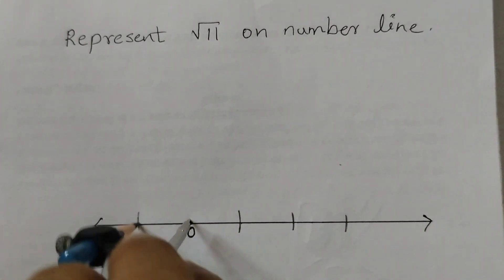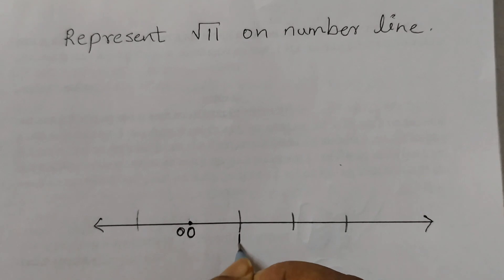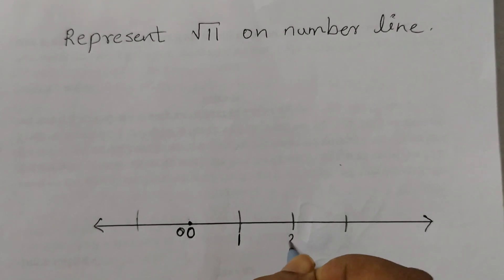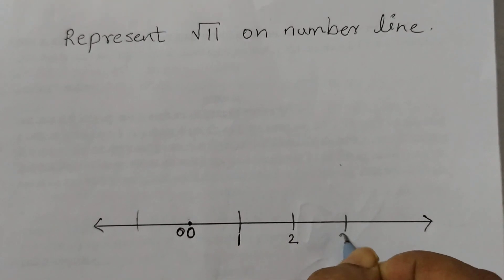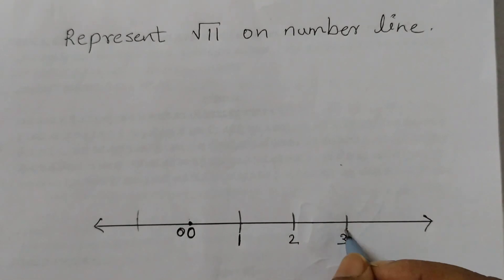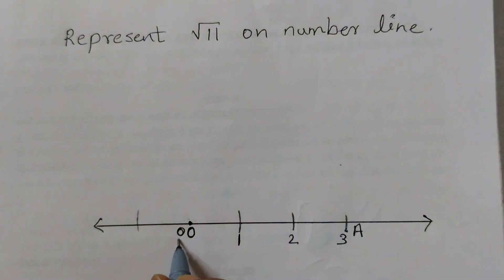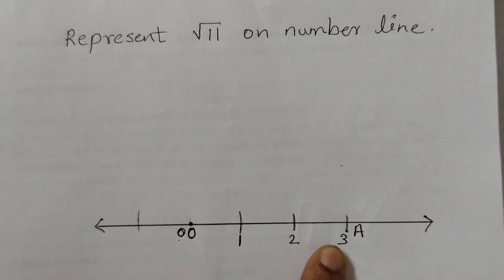You can cut an arc on the negative side also, however this is not required. Now label the points as 1, 2, 3, and the negative side as negative 1. Label this point as A, so this is O and this is A.